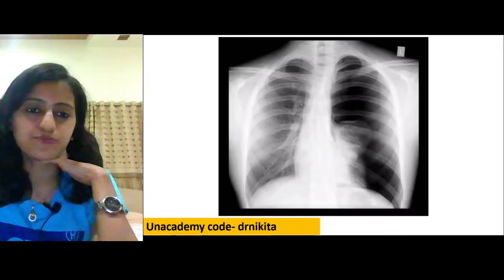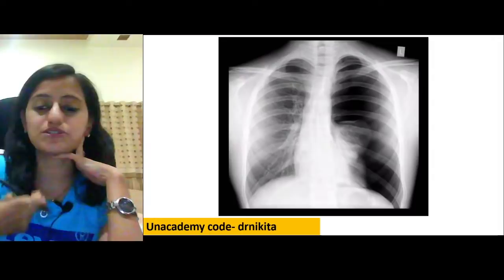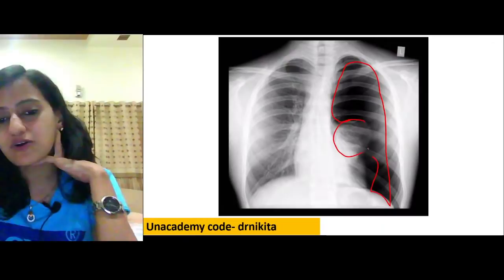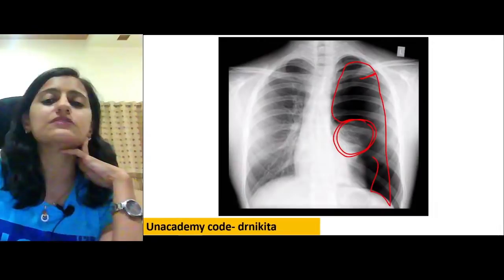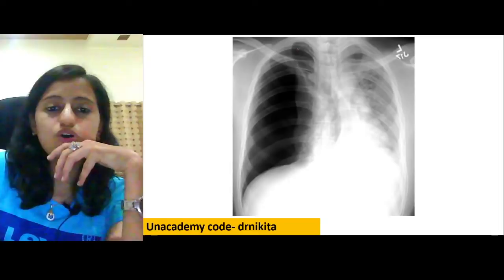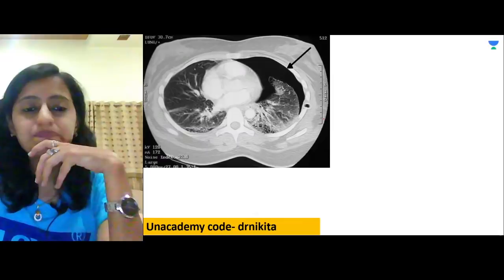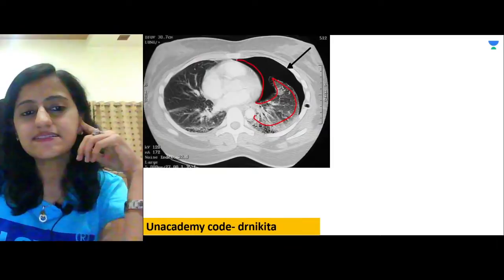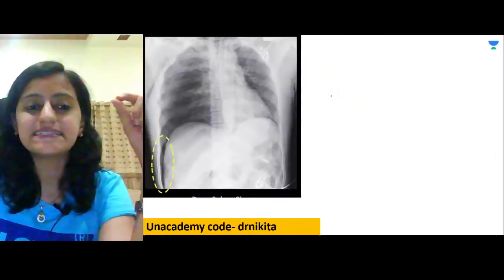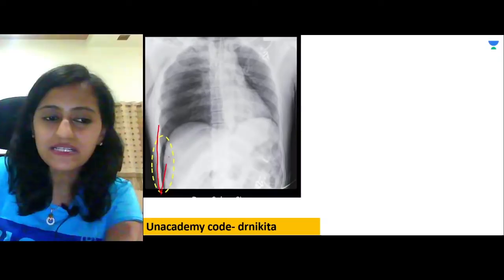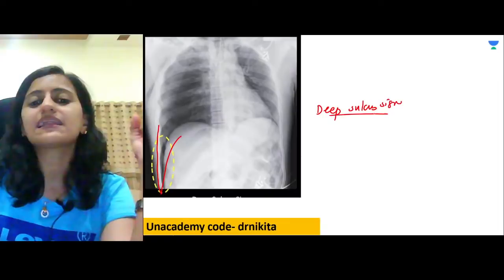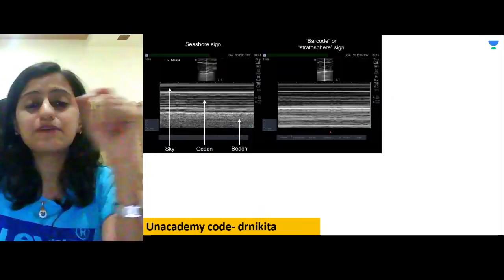Left-sided pneumothorax with collapsed lung: immediate management is wide-bore needle followed by ICD drain. On CT scan, pneumothorax appears as black area without vascular markings surrounding the lung. The deep sulcus sign is another sign of pneumothorax.